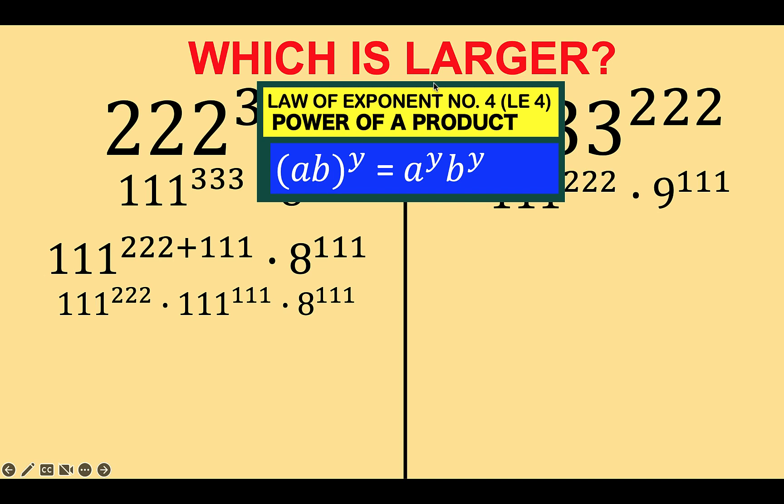So let's recall again another law of exponents, the power of a product. So you have here a product raised to a common exponent. So we can write this in the form. The first factor times the second factor all raised to the common exponent. So it looks like this. 111 times 8 all raised to 111.